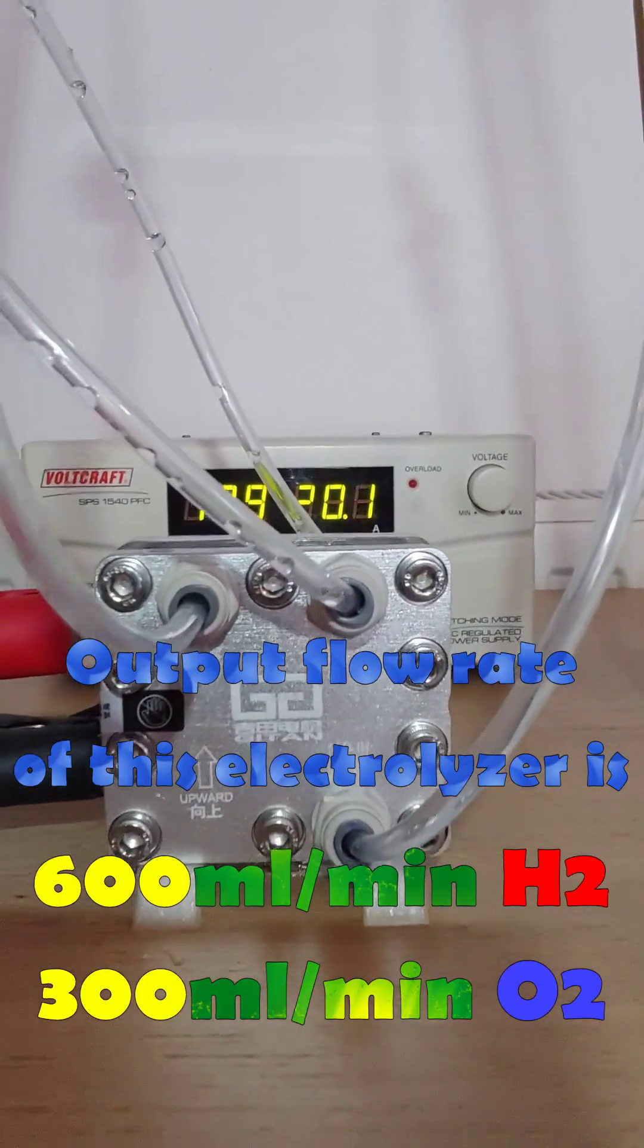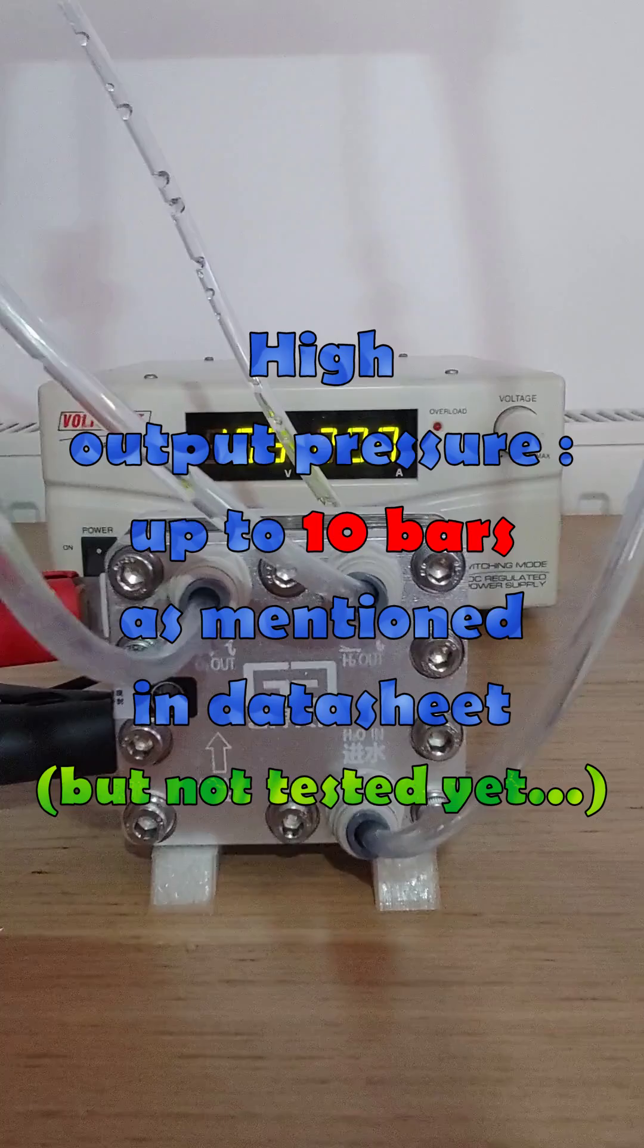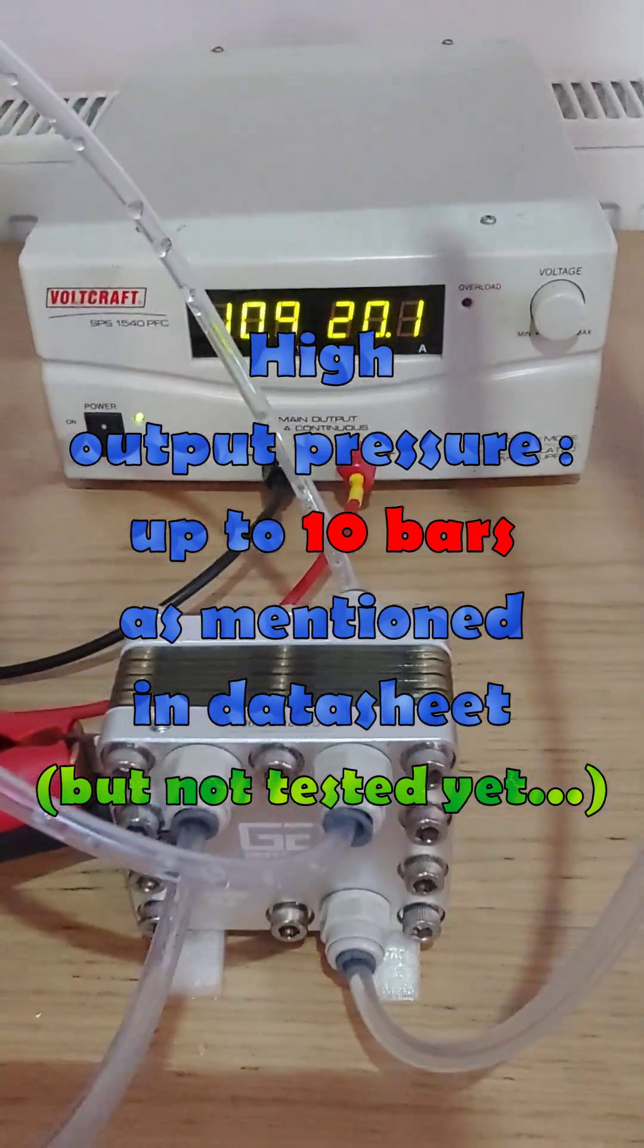Output flow rate of this electrolyzer is 600 milliliters of hydrogen per minute. Max output pressure is 10 bars as mentioned in datasheet.